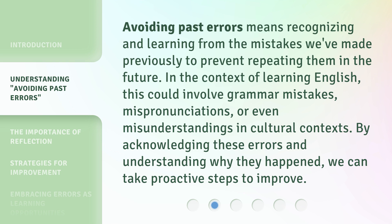In the context of learning English, this could involve grammar mistakes, mispronunciations, or even misunderstandings in cultural contexts. By acknowledging these errors and understanding why they happened, we can take proactive steps to improve.